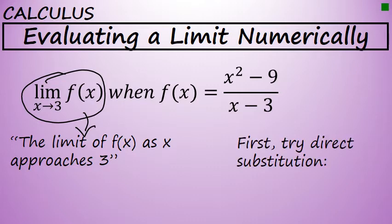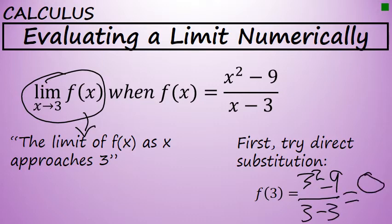First try direct substitution. In this case, f(3)—we're evaluating the limit as x approaches 3—substituting 3 in for x yields 3 squared minus 9 over 3 minus 3, which is 0 over 0. That's a number that does not exist. 0 over 0 is called the indeterminate form.